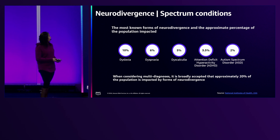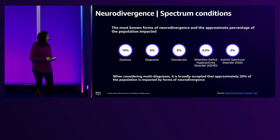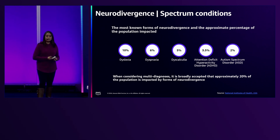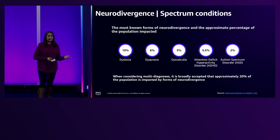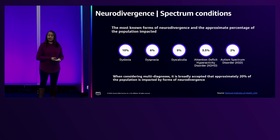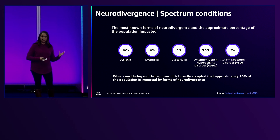Let's look at what the spectrum actually contains. Dyslexia, which involves difficulty in communicating and understanding spoken word. Dyspraxia, which has to do with hand-eye coordination — sometimes we label people as clumsy. Dyscalculia, which is difficulty in understanding math. And then the more well-known ones: attention deficit hyperactivity disorder and autism. All of these conditions make up the neurodiversity spectrum.